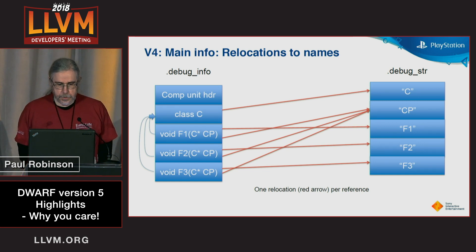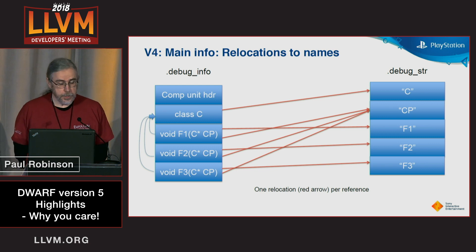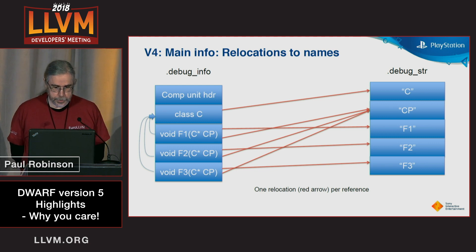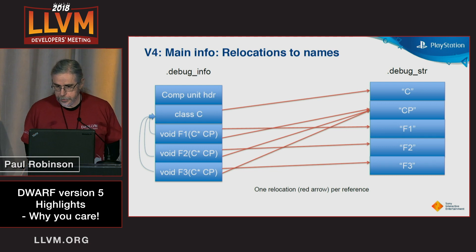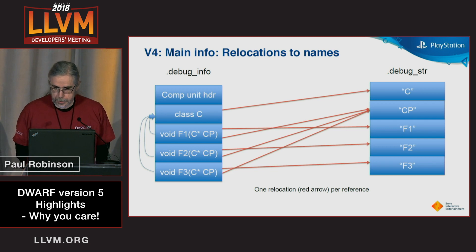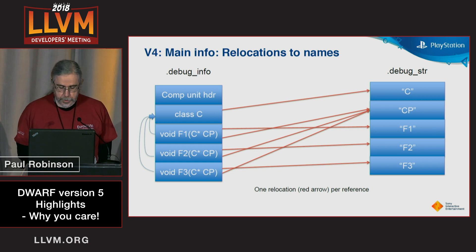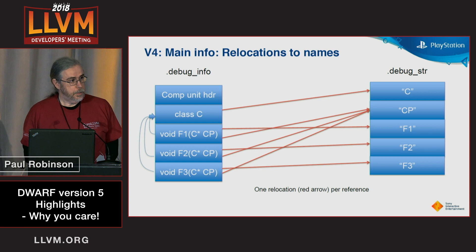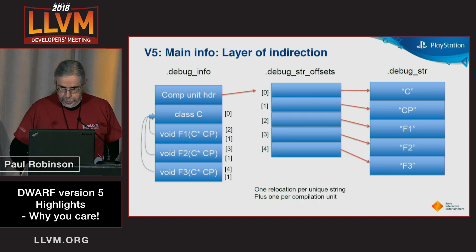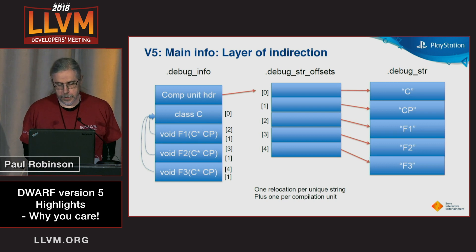Here's a representation on the left — it's sort of a sketch of what's in the debug info. It talks about different declarations, and it points to strings that are the names of things in the debug_str section. You'll notice that the second string on the right has multiple pointers to it — each of those is a relocation. Let's see if we can figure out how to have fewer relocations by, of course, adding a layer of indirection.